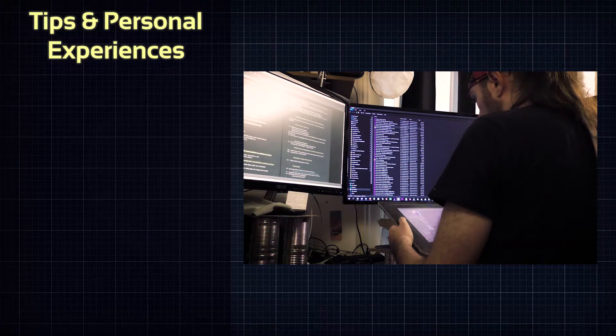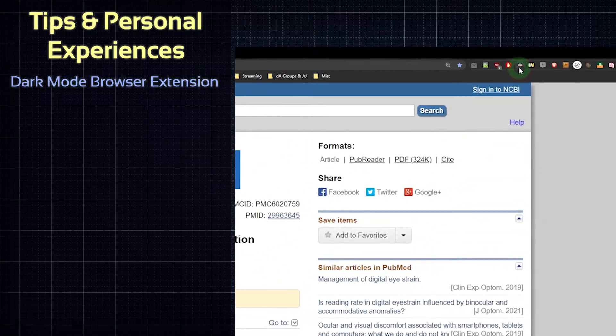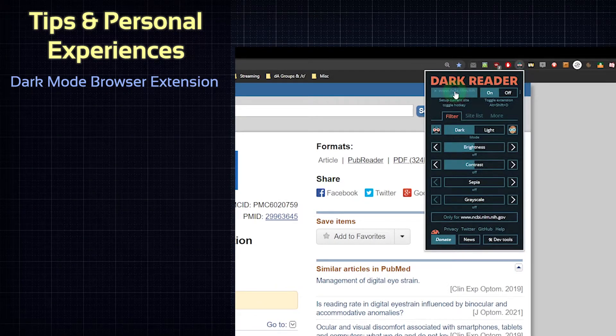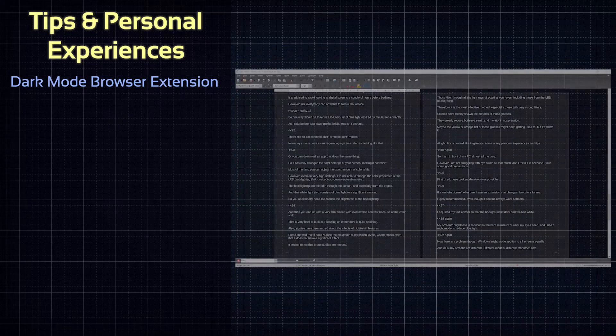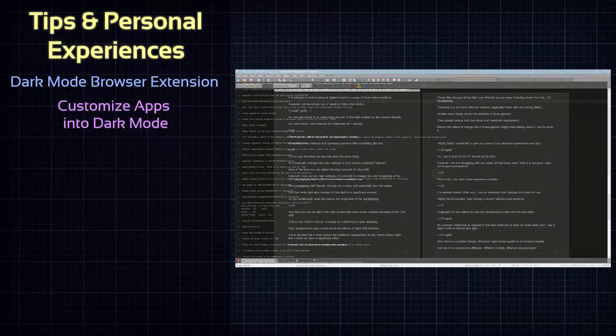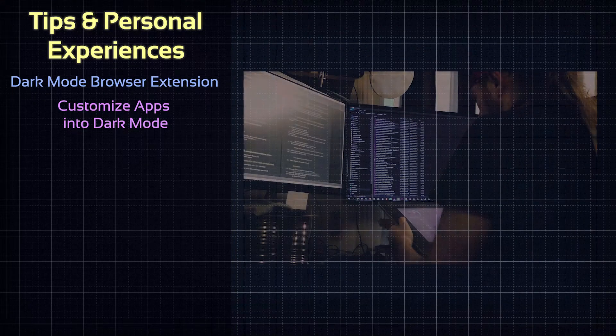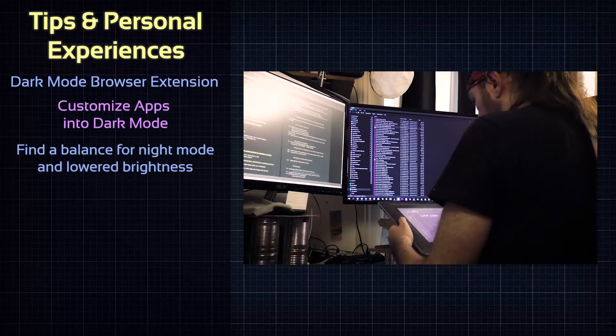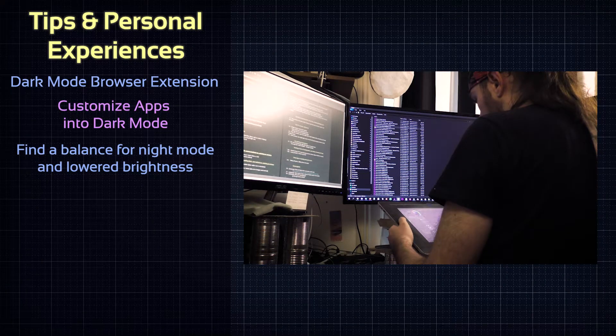First of all, I use dark mode whenever possible. If a website doesn't offer one, I use an extension that changes the colors for me. Highly recommended, even though it doesn't always work perfectly. I adjusted my text editor so that the background is dark and the text white. My screen's brightness is reduced to the bare minimum of what my eyes need and I use a night mode to reduce blue light.